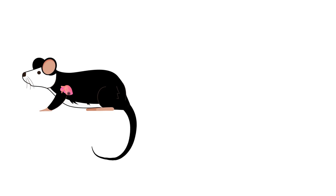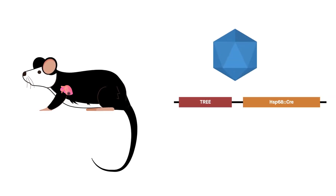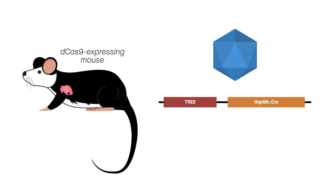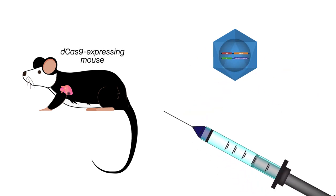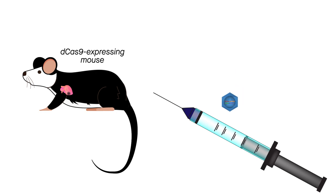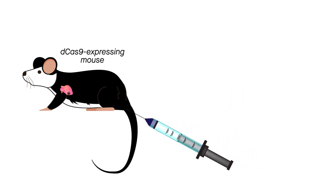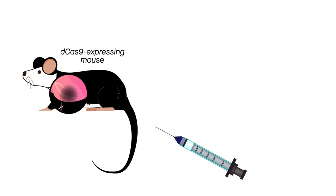The researchers were also able to manipulate the expression of specific endogenous genes in mice by combining the TREEs with a CRISPR epigenome editing system, suggesting the potential for injury-associated control of genes within their normal genome locations.